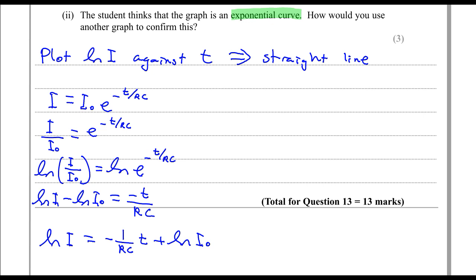And we can see now that this is in the form y is equal to mx plus c, which is the equation of a straight line. So if we put ln i on the y-axis and if we put t on the x-axis, it should be a straight line with the ln i0 being the y-intercept and the gradient is minus 1 over RC.